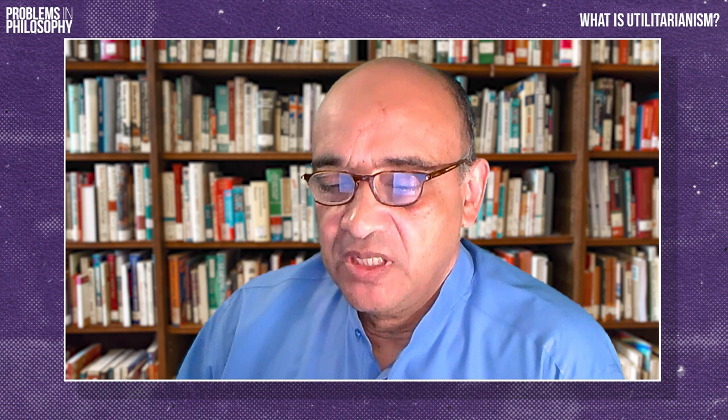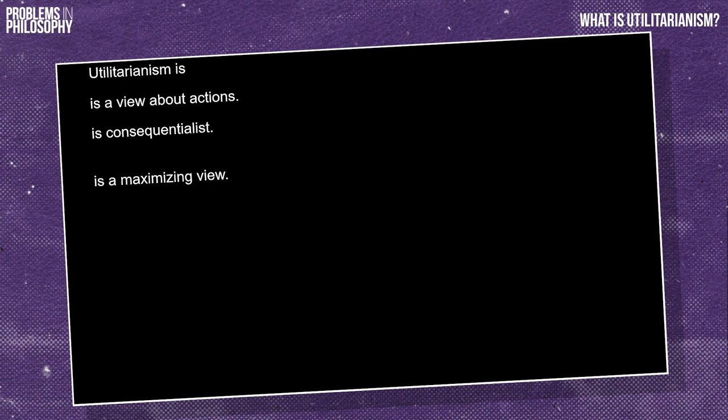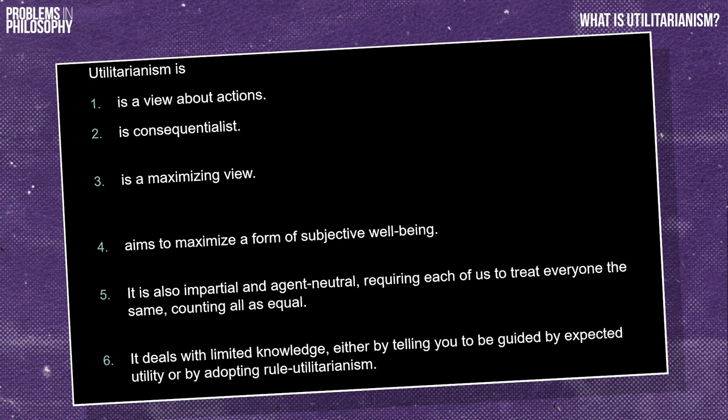Here are the features of utilitarianism we've discovered so far. It's a view about actions. It's consequentialist. It's a maximizing view. What it aims to maximize is a form of subjective well-being. And it's also impartial, requiring each of us to treat everyone the same, counting all as equal. And agent neutral — if we're faced with the same choice between options, what I should do is the same as what you should do. Finally, it deals with our limited knowledge by telling us to be guided by expected utility, in the case of act utilitarianism, or by adopting rule utilitarianism.